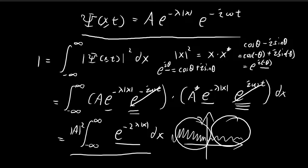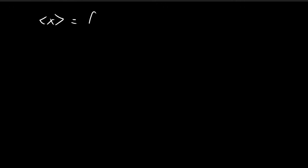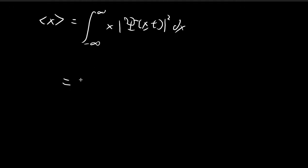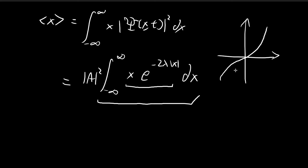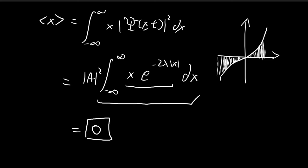For part b, we need to find the expected values ⟨x⟩ and ⟨x²⟩. To find ⟨x⟩ we plug the wave function into the expectation value integral. Note that the integrand — x multiplied by |ψ|² — is an odd function. For an odd function integrated from −∞ to +∞, contributions from the negative side cancel those from the positive side, so the result is 0. Therefore ⟨x⟩ = 0.